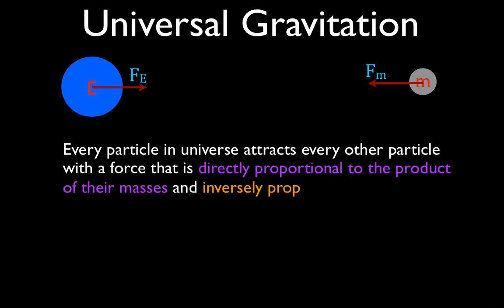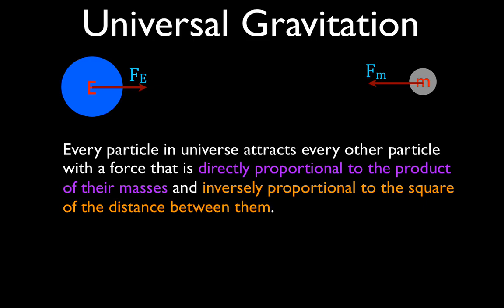The force is directly proportional to the product of the two masses — the product of the masses of the objects — and inversely proportional to the square of the distance between them. That leads us to this equation: the force of gravity is equal to the mass of one object times the mass of the other object — M1 times M2 — divided by the square of the distance between them, because it's inversely proportional to that square.